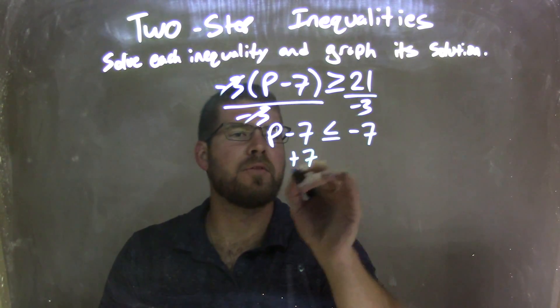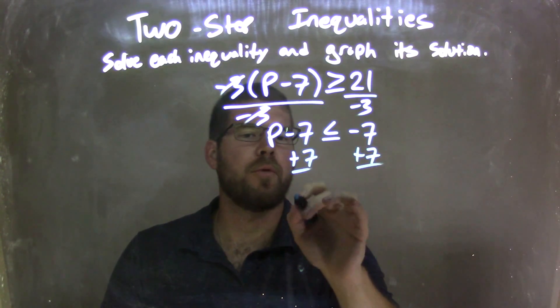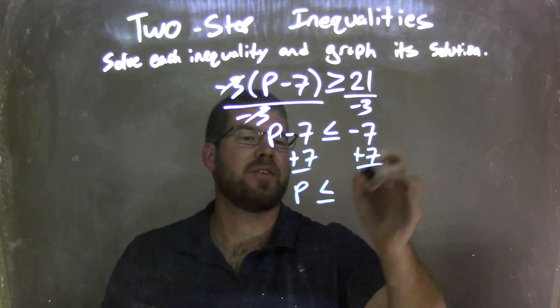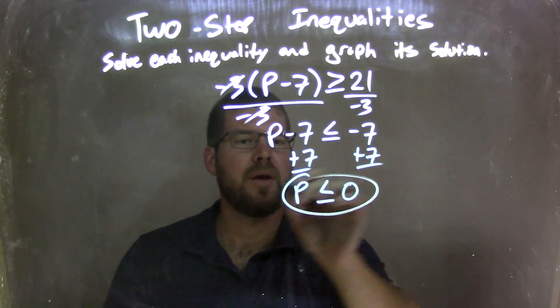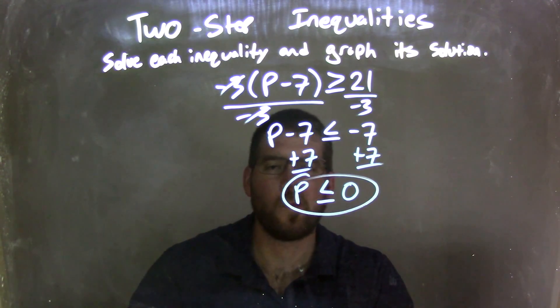And now I need to add a 7 on both sides. Hopefully this is pretty simple for you, where P is less than or equal to, negative 7 plus 7 is 0, and there we go. P is isolated, and it's looking brilliant, fantastic.